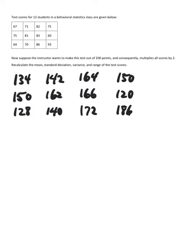Let's recalculate the mean. The sum of all 12 of these new adjusted scores is 1,814. So we have 1814 divided by 12. And I get 151.17.